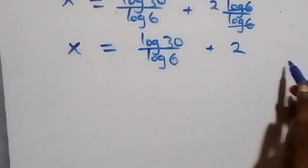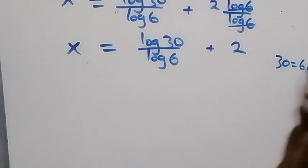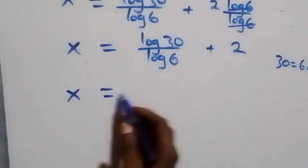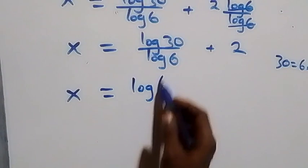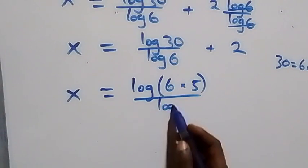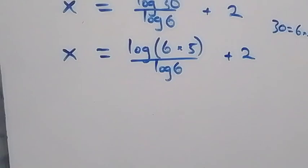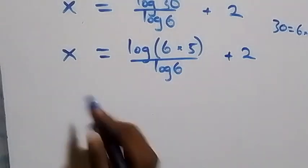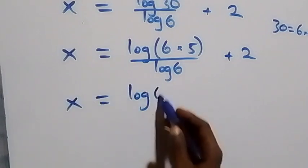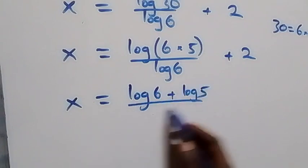We can express 30 as 6 times 5. Then what we have becomes x equals log of 6 times 5 over log 6, plus 2. This also follows the product law of logarithm, and we separate this to get x equals log 6 plus log 5, then over log 6, plus 2.